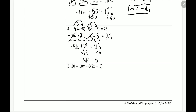We have negative 4k is equal to 4. We divide both sides by negative 4. These things cancel, and we're left with k equal to 4 divided by negative 4, which is negative 1. And that's our answer for number 4.